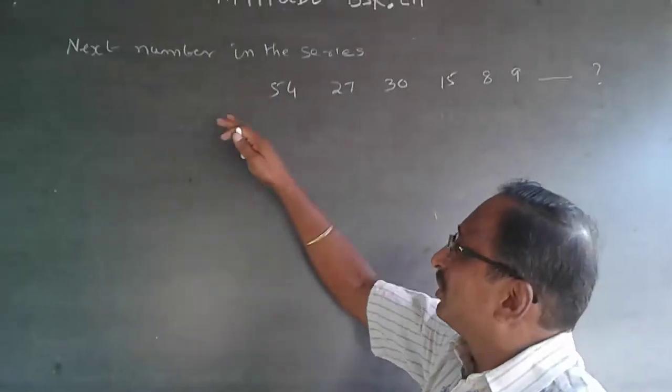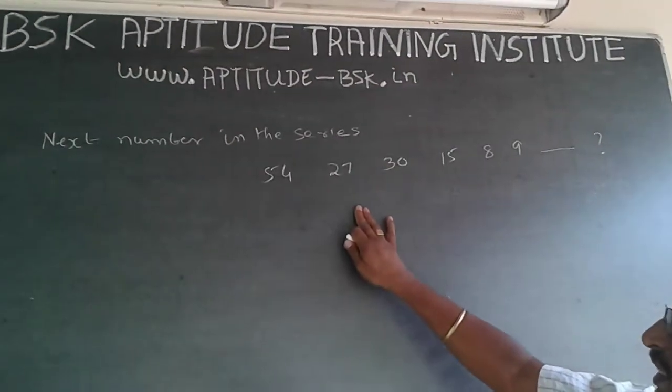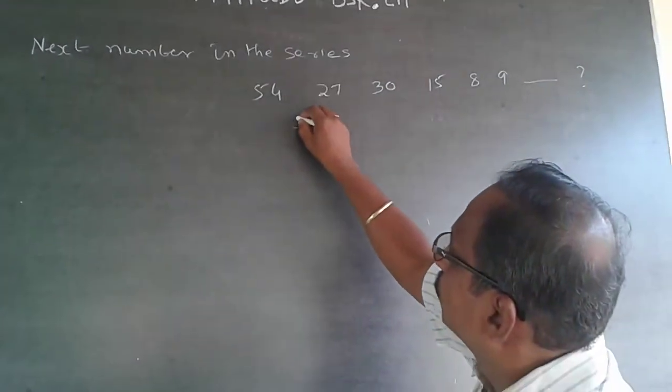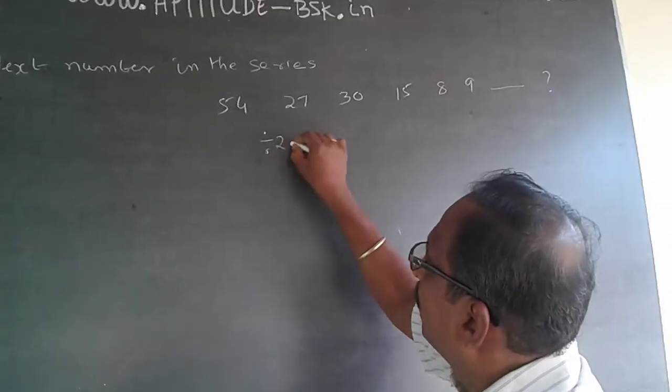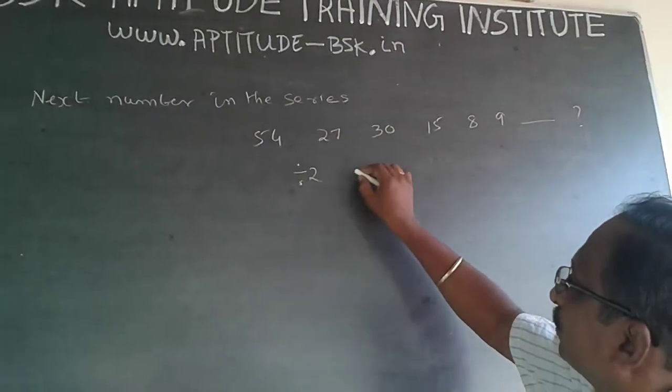Whenever you get lost, let us see what exactly is happening. So, 54, 27 relationship is divided by 2. Divide by 2. 54 divided by 2 will be 27. Then, 27, 30 is plus 3.